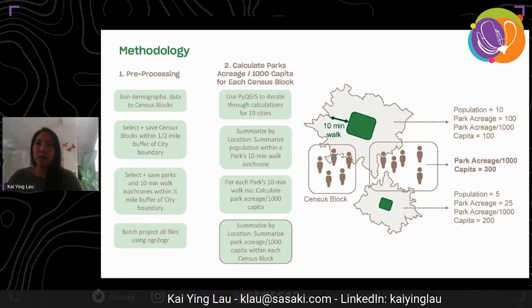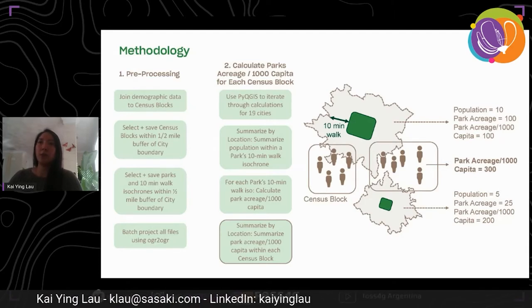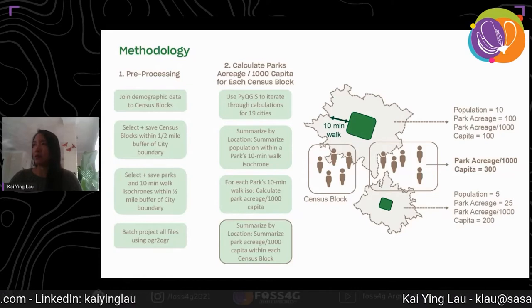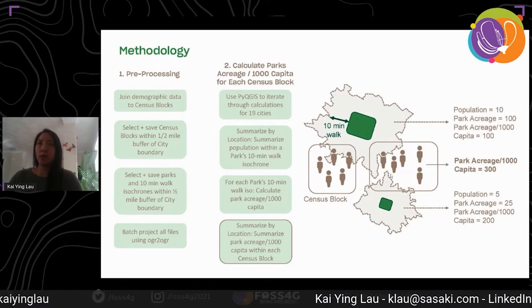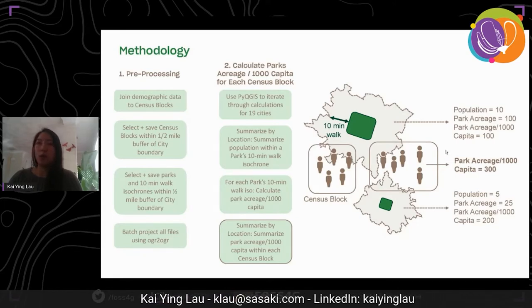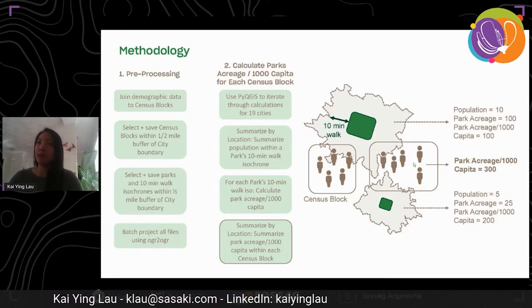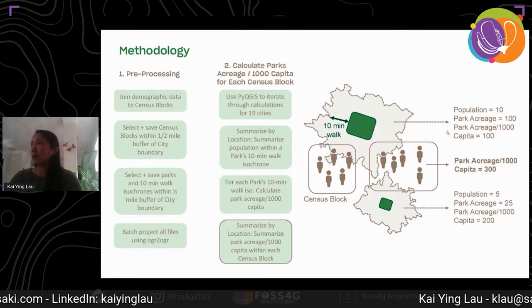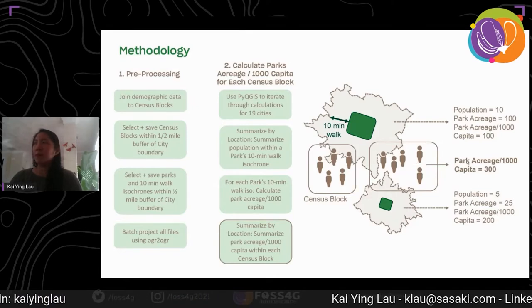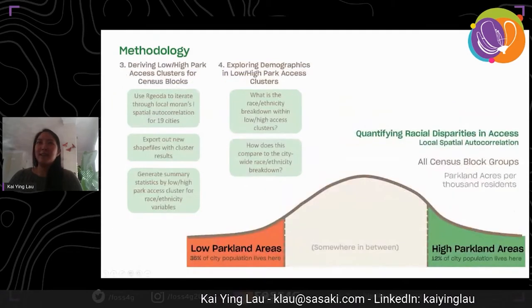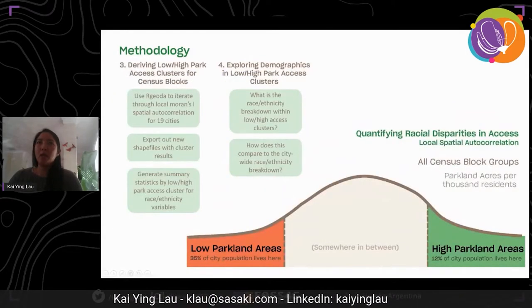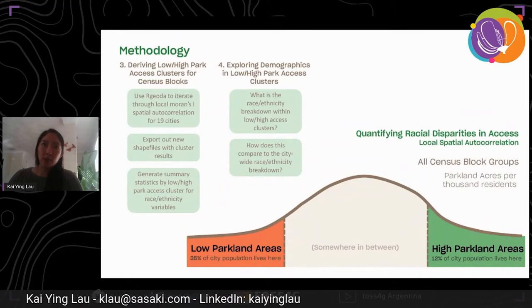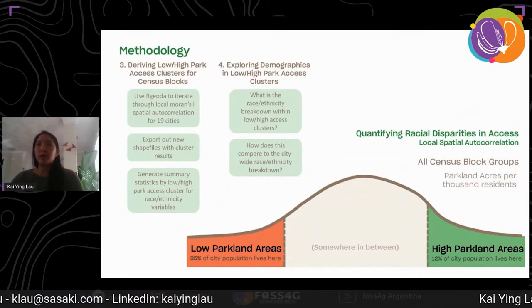We then ran Summarize by Location again but on the census blocks to sum up the park acreage per thousand capita for any 10-minute walk circles that intersected. For this census block on the right, if we add up the park acreage per thousand capita for every 10-minute walk that intersects the boundary, we get a sum of 300 park acreage per thousand capita — these numbers are made up right now so they don't really mean anything. Once each census block has park acreage per thousand capita assigned, we proceeded to the next step.